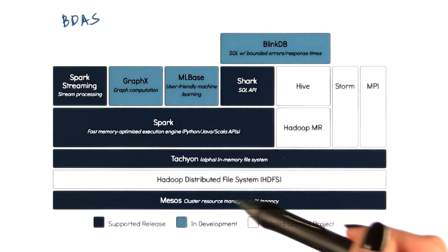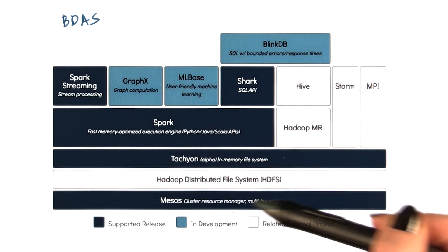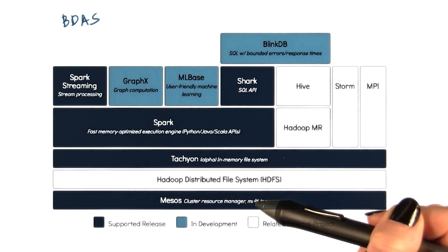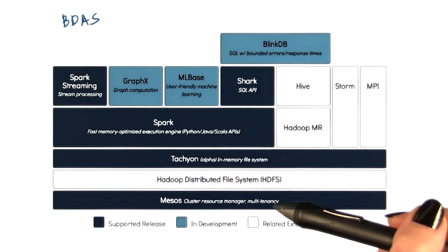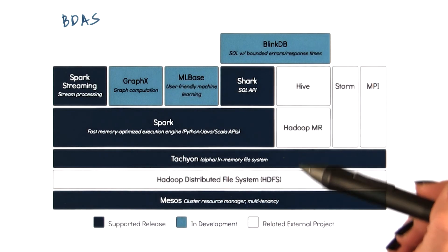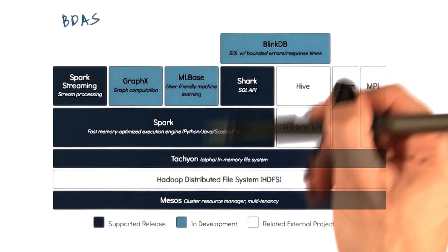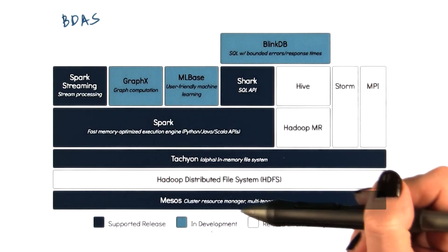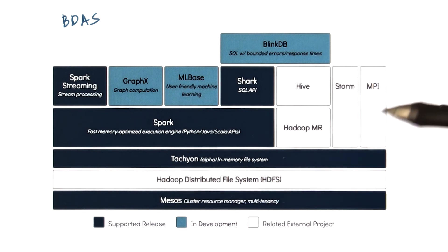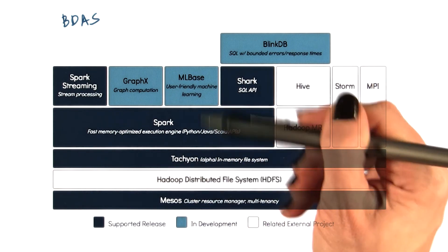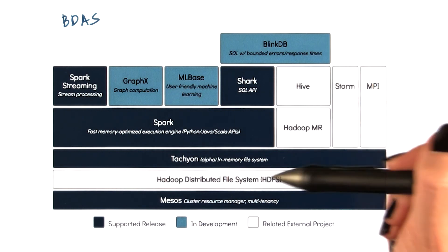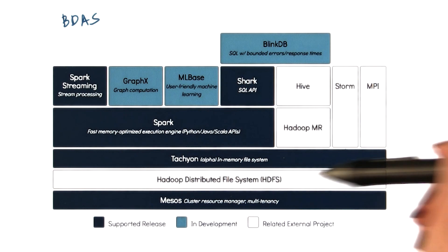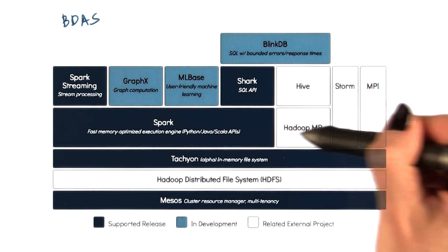Another important component is Mesos, the lowest-level scheduling framework and resource manager that allows resources to be partitioned and used by different types of frameworks. You may have a Hadoop partition, a Spark partition, or an MPI partition, and using Mesos, these will be able to coordinate and negotiate among themselves, giving you elasticity across these very different types of frameworks.